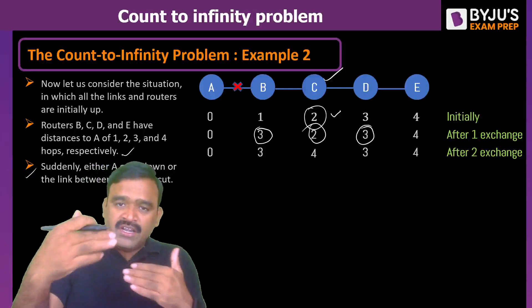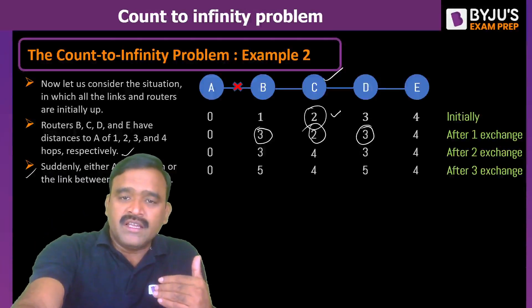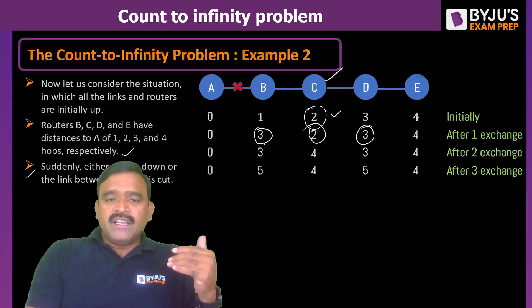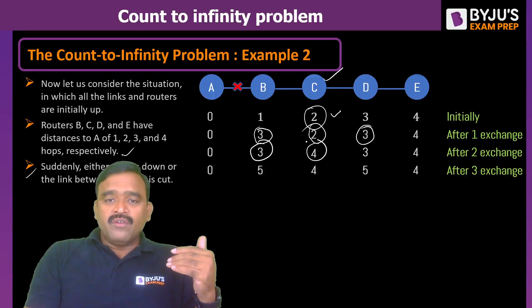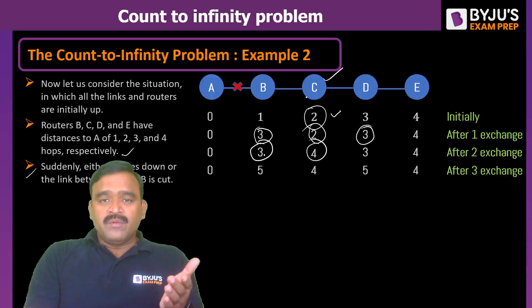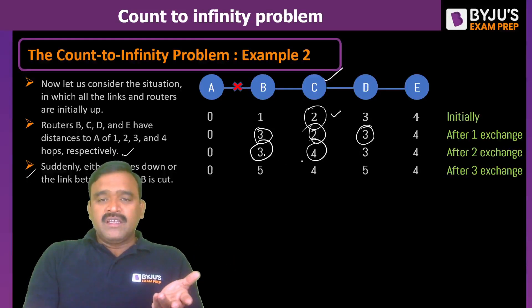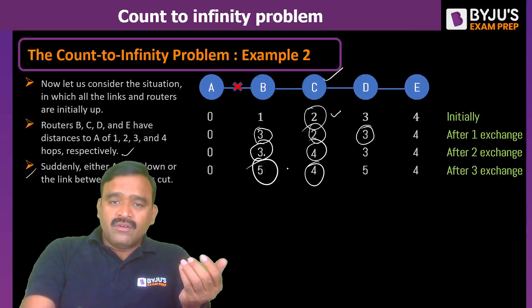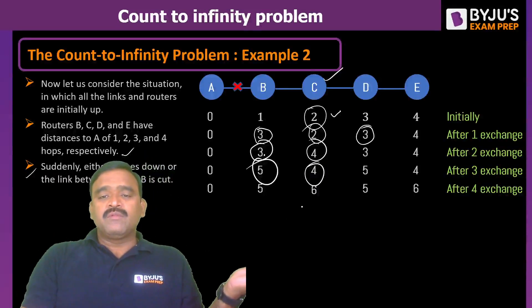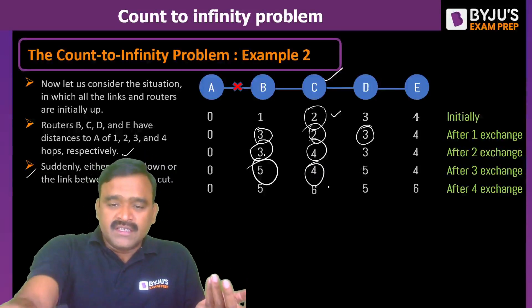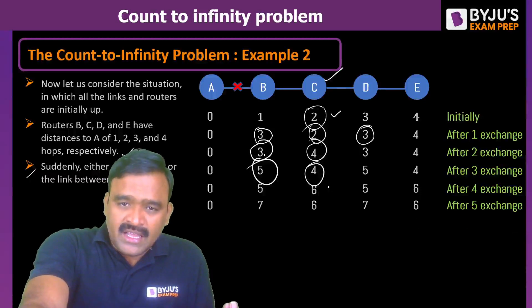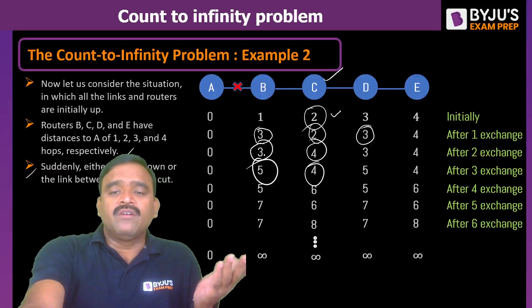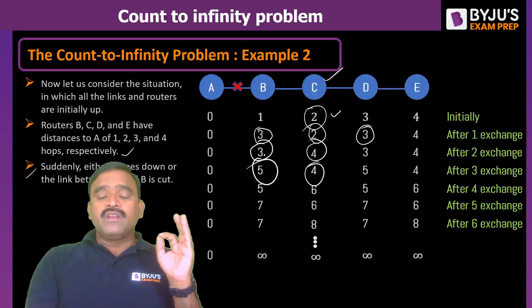Like this, if you continue. Now let us suppose next time B is having 3 and the neighbor is reaching in 4. How it can reach in 3? Because to reach the neighbor, the only neighbor is C. To reach neighbor, it will be 1 hop and C to A is 4. Then C to A is 5. Then obviously it will become 5. Now if C's turn has come now, C will update it as 6 because both the neighbors are reaching in 5. It will be 6. It is after fourth exchange. Like that, it will go to infinity count. That is what count to infinity problem.